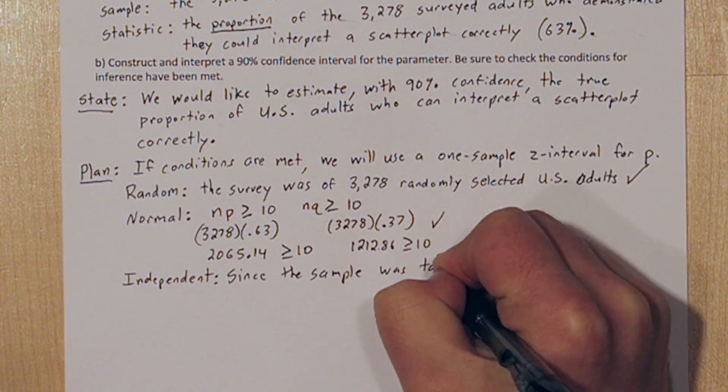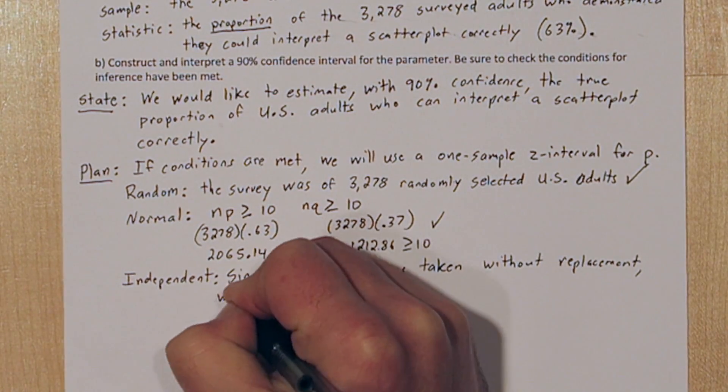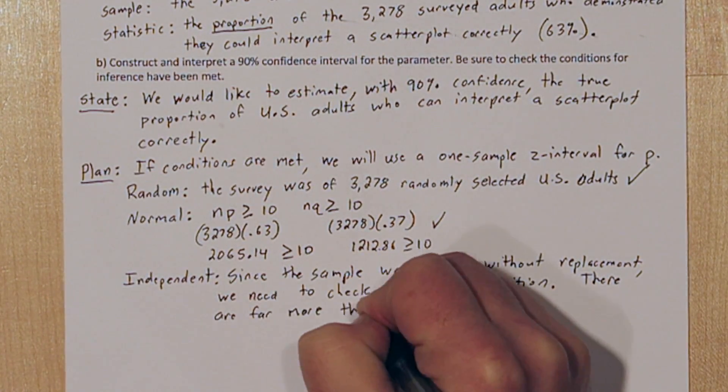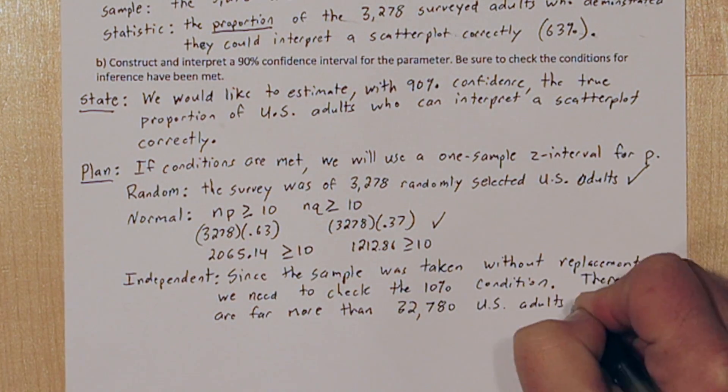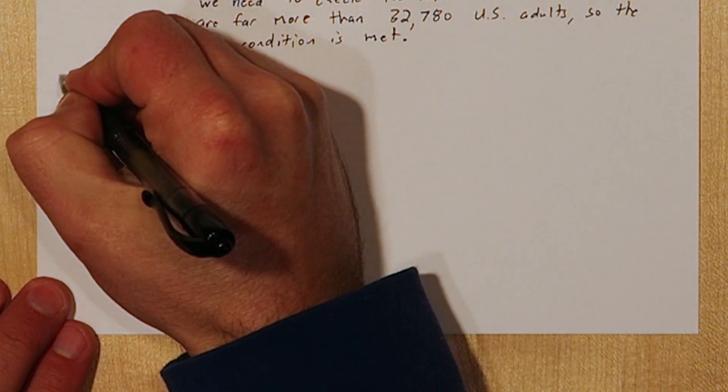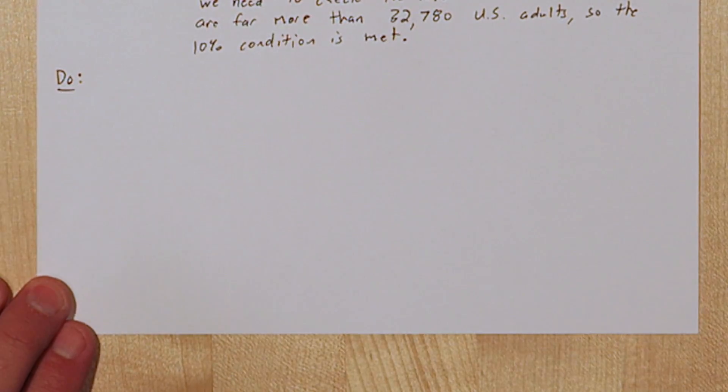Next we need to check the independent condition. Since the sample was taken without replacement we need to check the 10% condition. There are far more than 32,780 U.S. adults so the 10% condition is met. Now we're ready to actually construct the confidence interval.